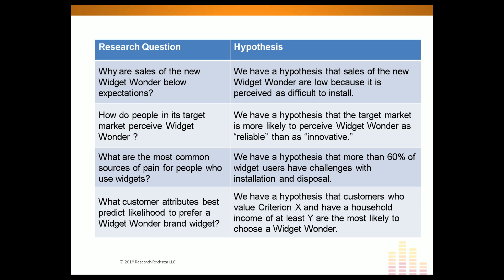In market research, we sometimes state things in terms of a high-level research question, and in some cases that's fine. However, whenever possible, I want to think precisely about my hypotheses so that not only can I design a great instrument, but it also clues me in on what my methodology and data sources need to be. Let's start with a super common research question: why are sales of the new widget wonder below expectations? Our hypothetical hypothesis is that sales are low because it is perceived as difficult to install.